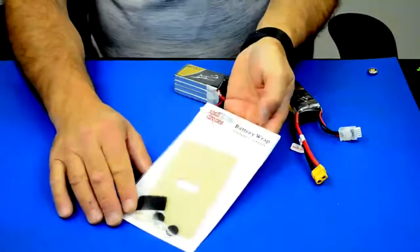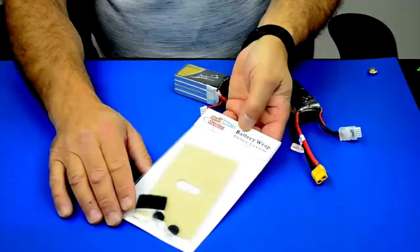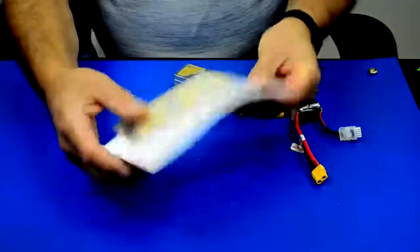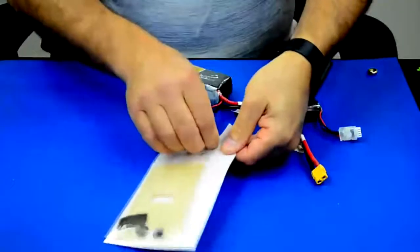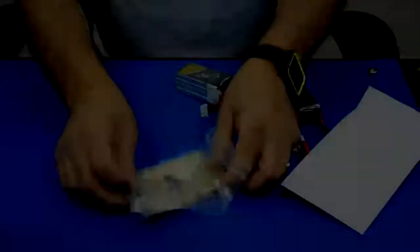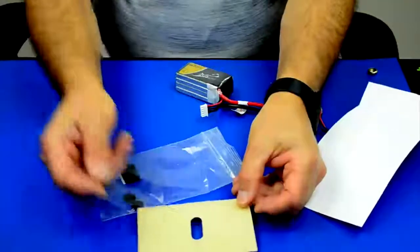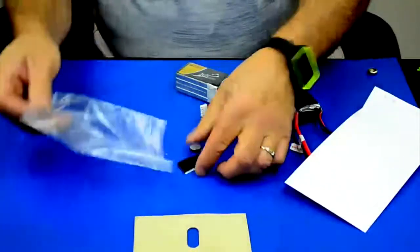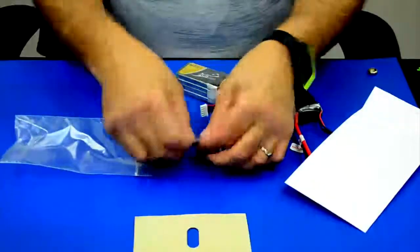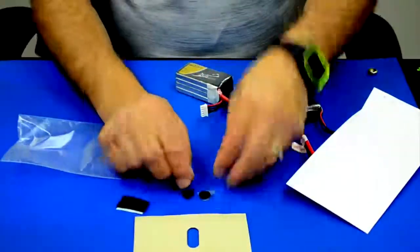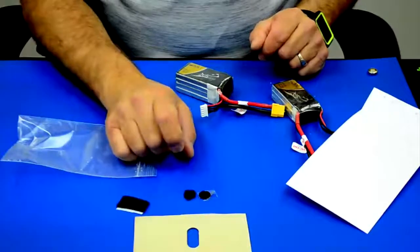The battery wrap comes packaged like this. It will fit a three or four cell battery pack. The instructions are on the back and let's open it up and see what you get in here. You get a large silicone wrap for your battery. You get a velcro strip and two velcro dots, one hook and one loop.